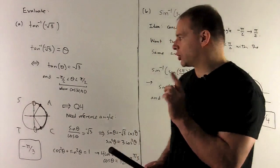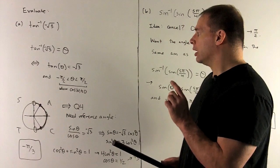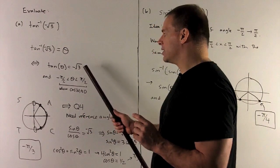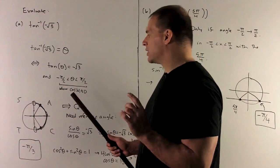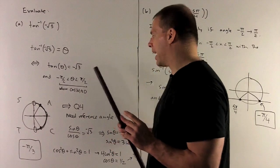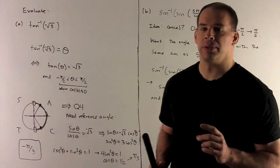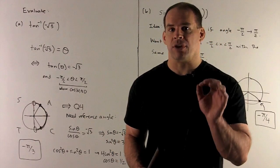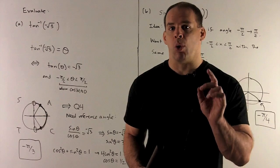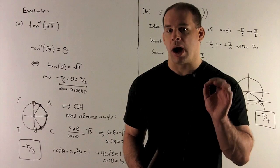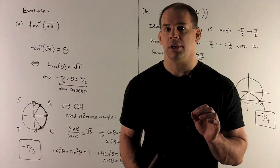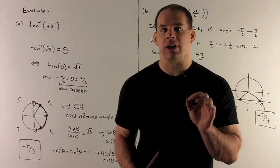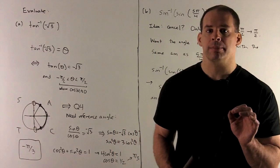What are we trying to do here? I'm trying to find the angle theta that gives us tan theta equals minus square root of 3, and that's between minus pi halves and pi halves. I want two things: a reference angle, and I want to know what quadrant we're working in. To find the quadrant, I can use the CAST method.